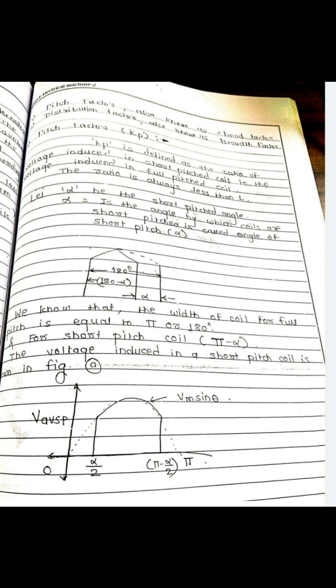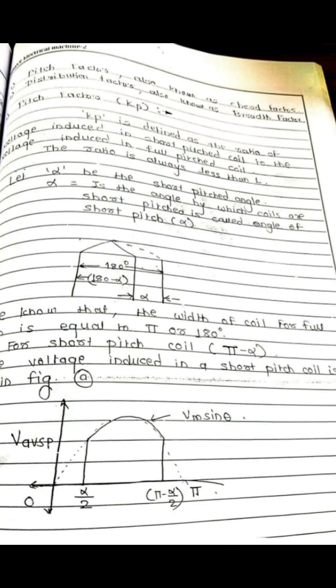The pitch factor is denoted by Kp, where Kp is equal to the ratio of the voltage induced in a short pitch coil to the voltage induced in a full pitch coil. This ratio is always less than 1.